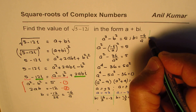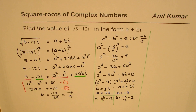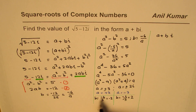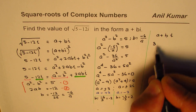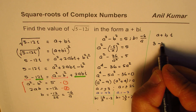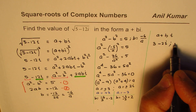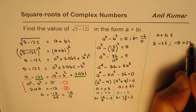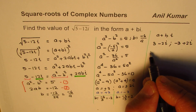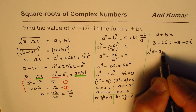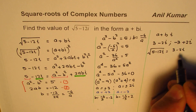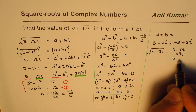So we get two complex numbers representing the square root of 5 minus 12i. In the form a plus bi: when a equals 3, b equals minus 2, giving us 3 minus 2i. Or when a equals minus 3, b equals plus 2, giving us minus 3 plus 2i. So we can write the square root of 5 minus 12i as equal to 3 minus 2i or minus 3 plus 2i.